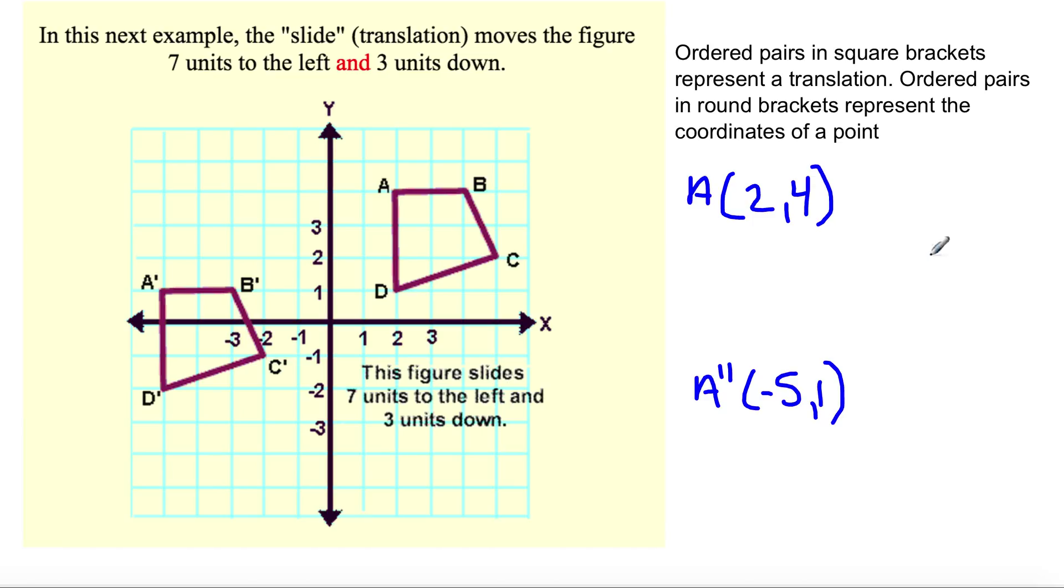Translation vector, in this case, I'll write this in another color. Translation vector will be, square brackets, remember. 7 units to the left, so negative 7. And 3 units down, negative 3.